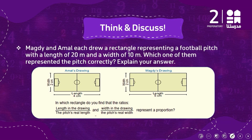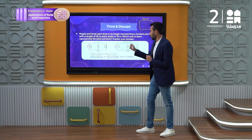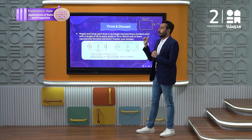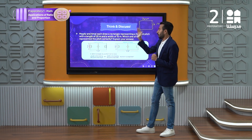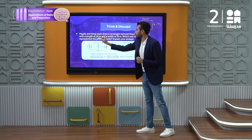Let's think and discuss this question. Magdi and Amal each draw a rectangle representing a football pitch with a length of 20 meters and a width of 10 meters. Which of them represented the pitch correctly? Explain your answer. From your question, you can see Amal's drawing or Magdi's drawing — this is 20 and this is 10.